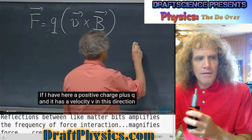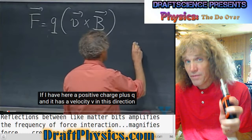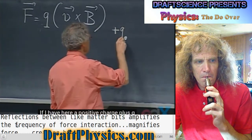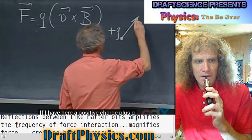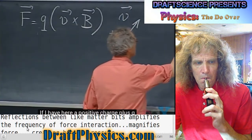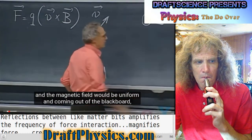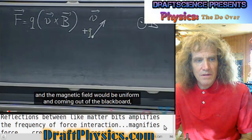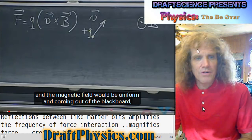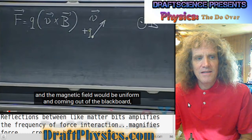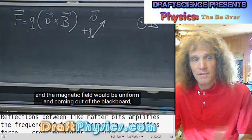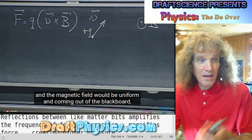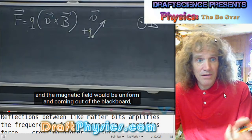A positive charge plus Q has a velocity V in this direction, and the magnetic field would be uniform and coming out of the blackboard. You could say pressure — I would say pressure. It's released at a certain pressure, it has a certain velocity because of that pressure, and then encounters a magnetic field, which I think should be described better than just saying B.